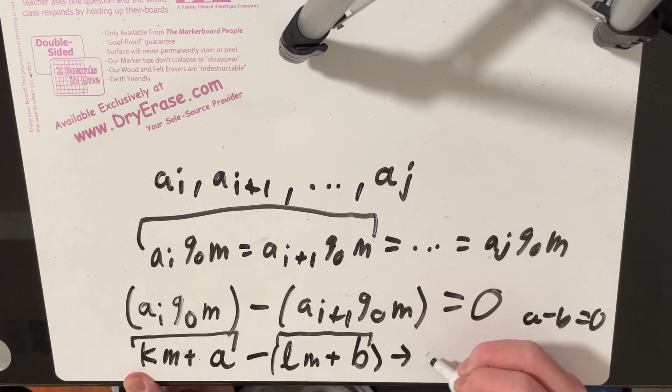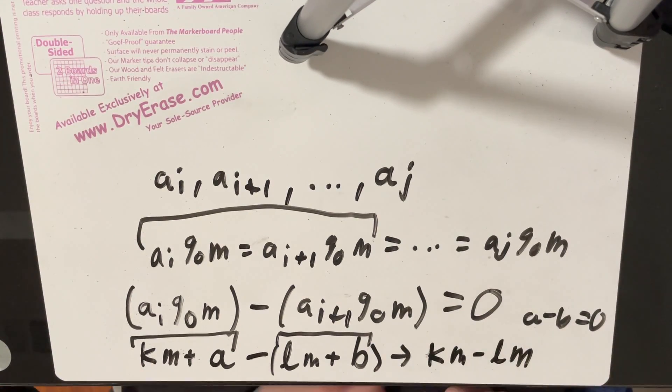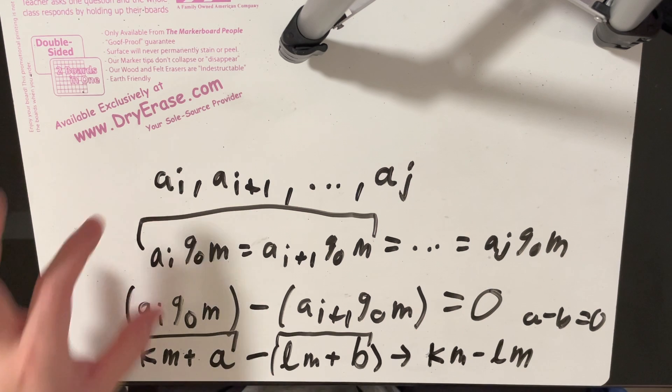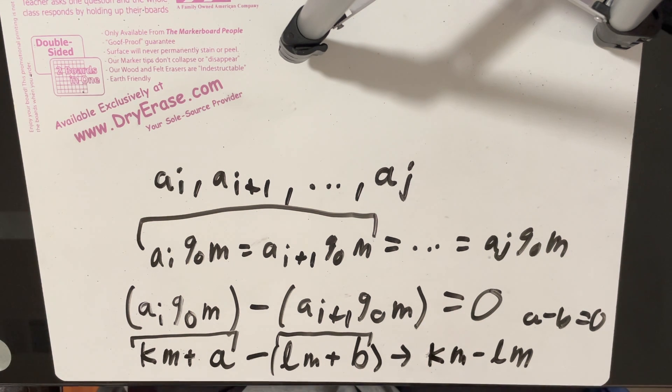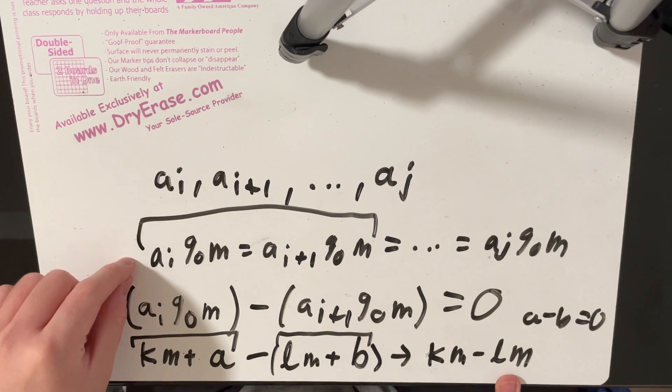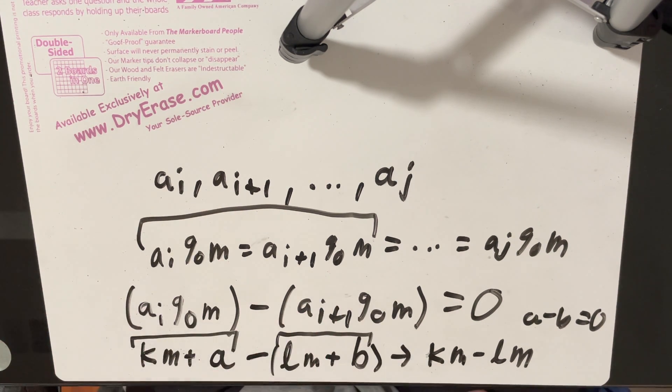So we can basically transform to just saying km plus a minus lm minus b, a minus b is equal to zero. So this basically turns into km minus lm. In other words, what this means is that we can reword a property of a friend group as if there exists some integer m that divides this difference of a_i and a_{i+1}.